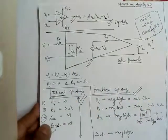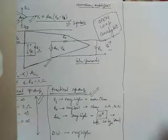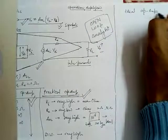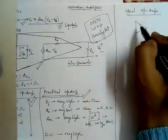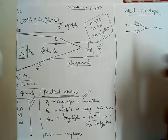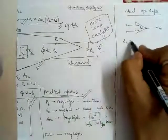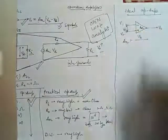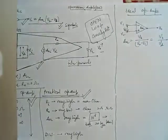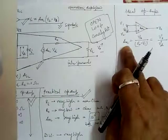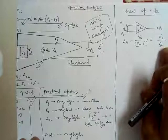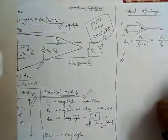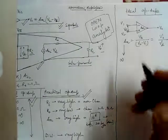Now moving to another very important concept. For an ideal operational amplifier — represented as a triangle with negative and positive terminals — the open-loop gain AOL equals Vout divided by the difference of the two input voltages (V2 minus V1), also written as Vout divided by Vd. Ideally, we want this open-loop gain to be infinite to get a perfect and 100% accurate output.